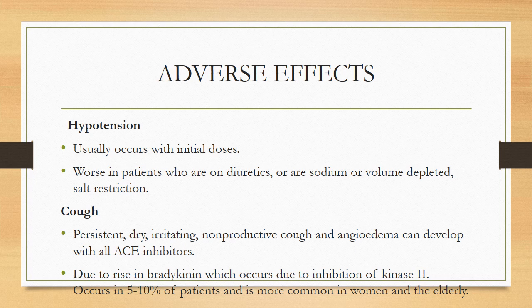Adverse effects: The most important side effect is hypotension — it mostly occurs with initial doses and is worse in patients who are on diuretics, are sodium or volume depleted, or are on salt restriction. Another important side effect is a persistent dry, irritating, non-productive cough, and angioedema can occur. These symptoms occur due to rise in bradykinin levels from inhibition of kinase 2, and occur in only 5 to 10 percent of patients, more common in women and elderly patients.